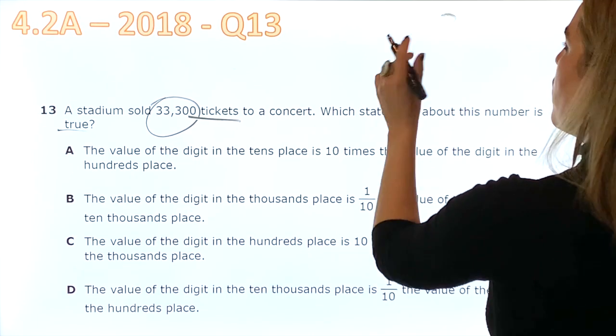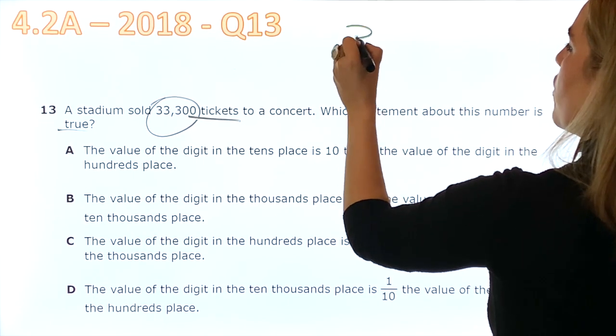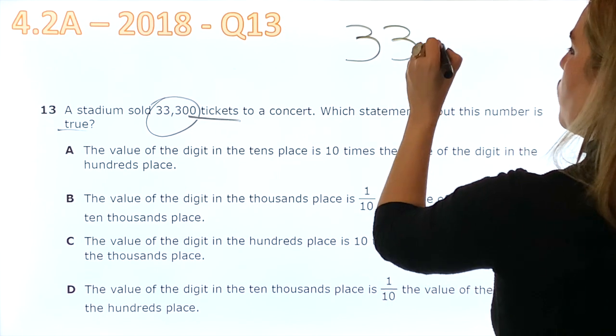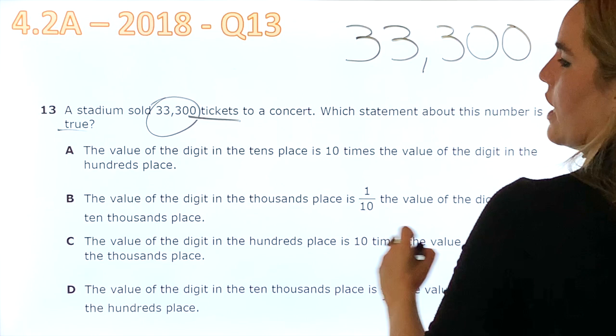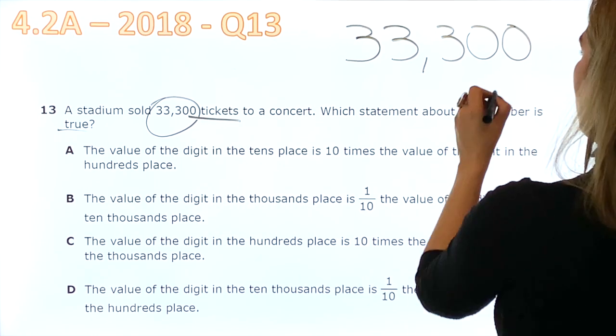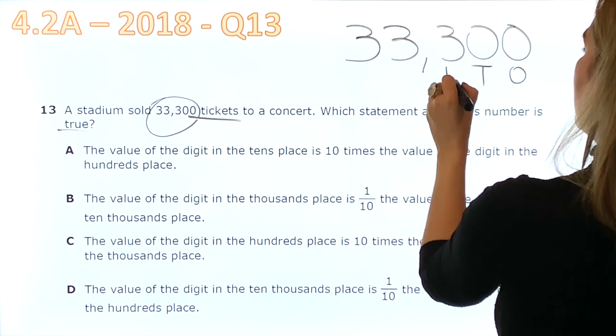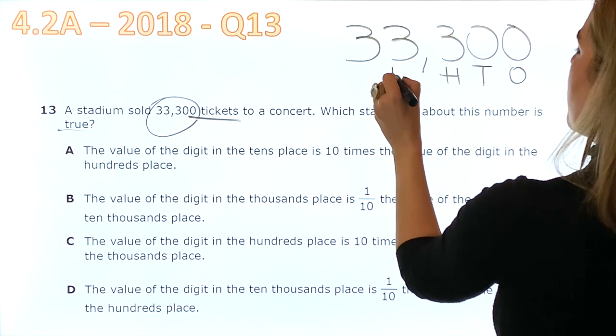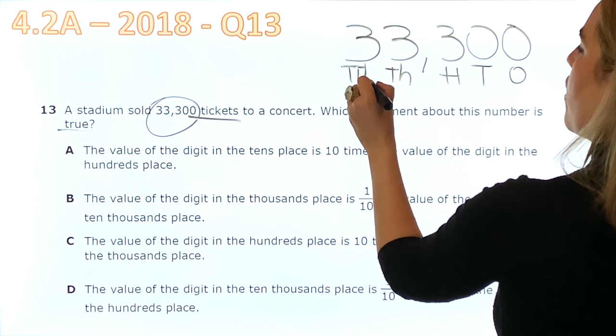Before we move on, we're going to write the number big: 33,300. It says the value of the digit in the tens place. Okay, I have my ones, tens, hundreds, thousands, and 10,000.